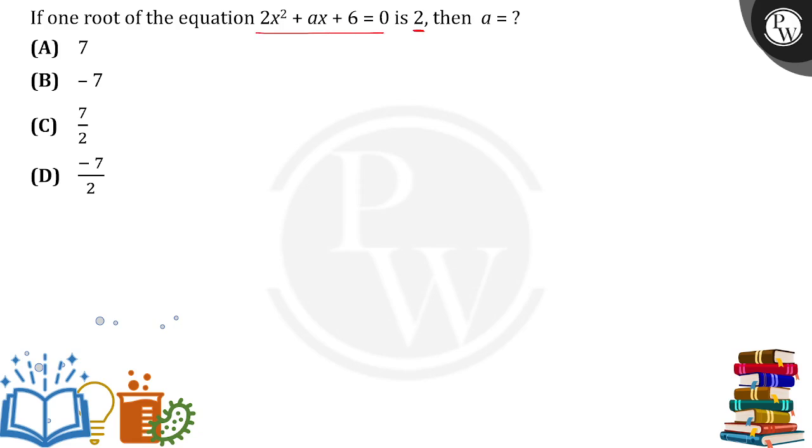Substitute x = 2. If x equals 2 in the equation, we get 2(2)² + a·2 + 6. 2² is 4, 2 times 4 is 8.